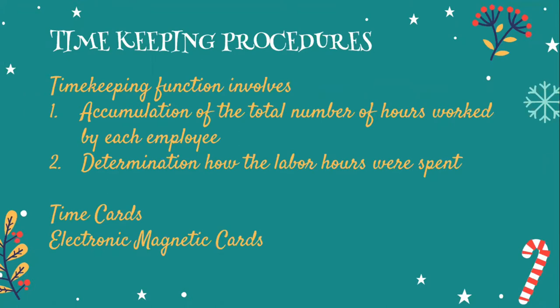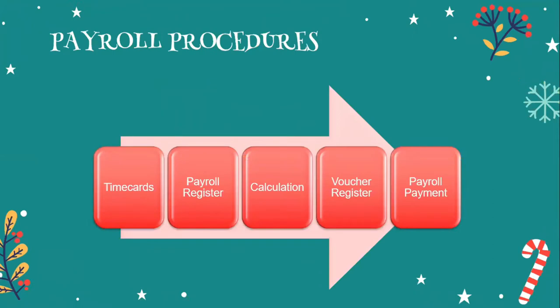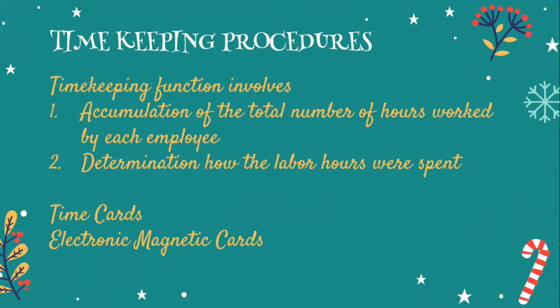Since we're talking about labor costs, it starts with the timekeeping function. It involves accumulation of the total number of hours worked by each employee and determination of how those labor hours were spent. We're talking about either direct labor, indirect labor, and those in the offices — support roles — whether selling or administrative.